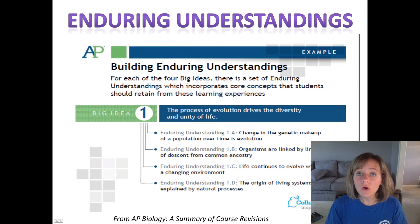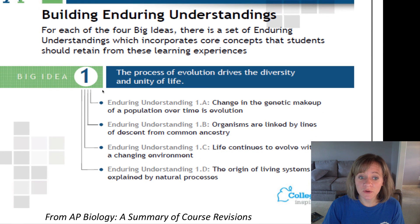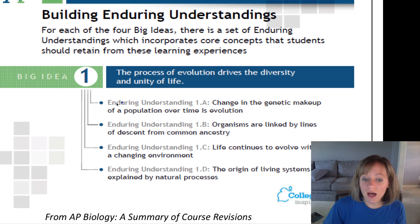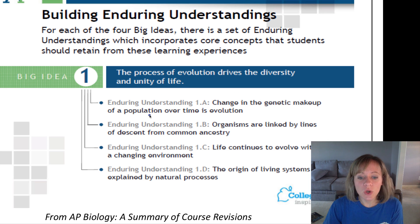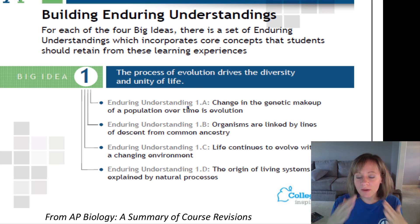Underneath the big ideas, we have something called enduring understandings. These are things that travel throughout the course — they don't apply to just one concept, they apply to many concepts. For example, one enduring understanding underneath big idea one is: change in the genetic makeup of a population over time is evolution. This is a concept we'd come back to in genetics and obviously in evolution. When I do the videos, I put up these enduring understandings so you have a frame of reference for what topic we're talking about.